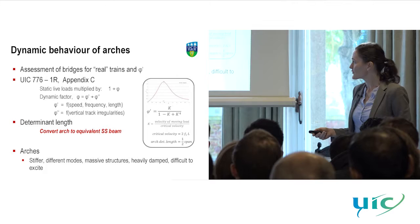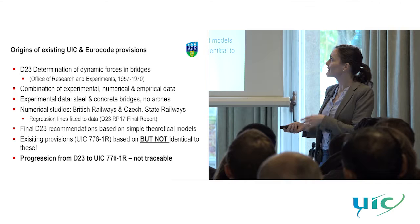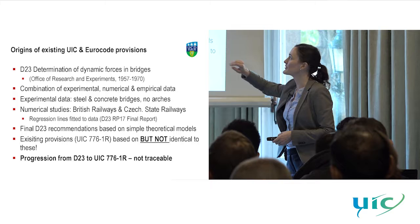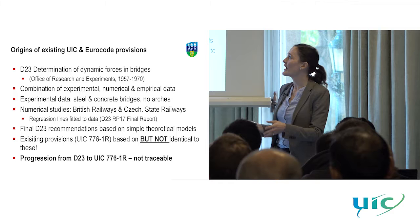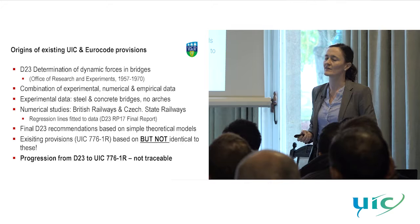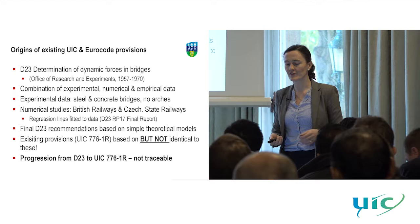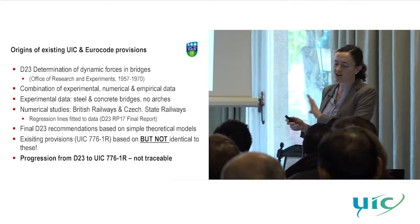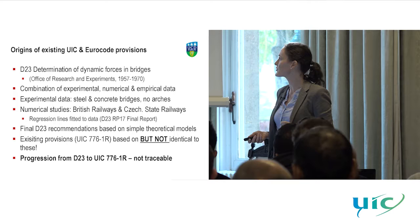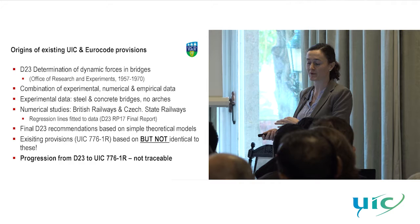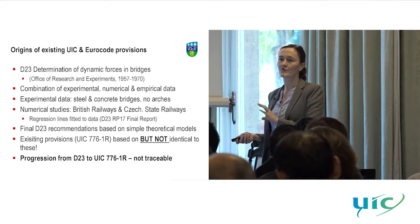We looked into the origins of the guidance for beam structures in more detail. These were essentially in documents from the 1950s up to 1970 put together by the Office of Research and Experiments, essentially a subgroup within the UIC. This work is a combination of experimental data, numerical data, and empirical curves fit to these. The recommendations from these D23 Determination of Dynamic Forces in Bridges documents are very similar to the recommendations in UIC 776, but they're not identical — again, a little bit of a lost transition from one set of documents to the next.